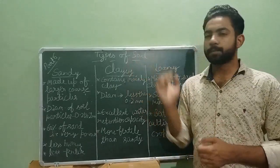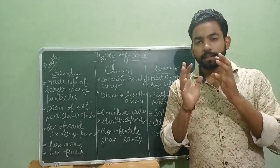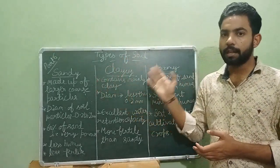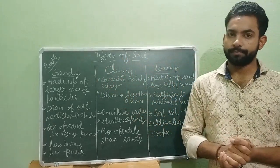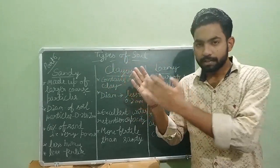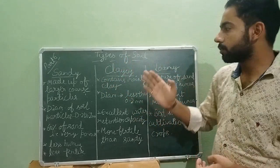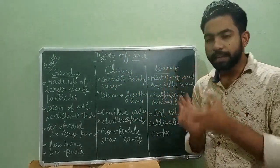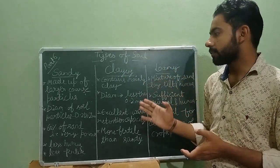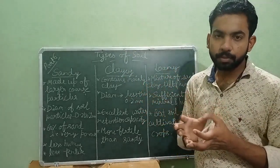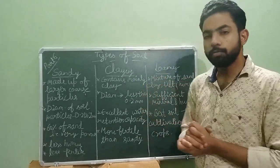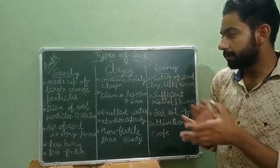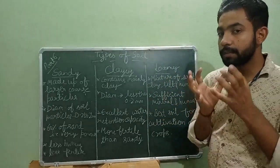Our new topic is types of soil. There are three main types of soil: sandy soil, clay soil, and loamy soil. Sandy soil is made up of larger, coarse particles. The diameter of the particles of soil is between 0.2 to 2 millimeters. It comprises 60 percent of sand. It is very porous. Sandy soil contains less humus, so it is very less fertile.